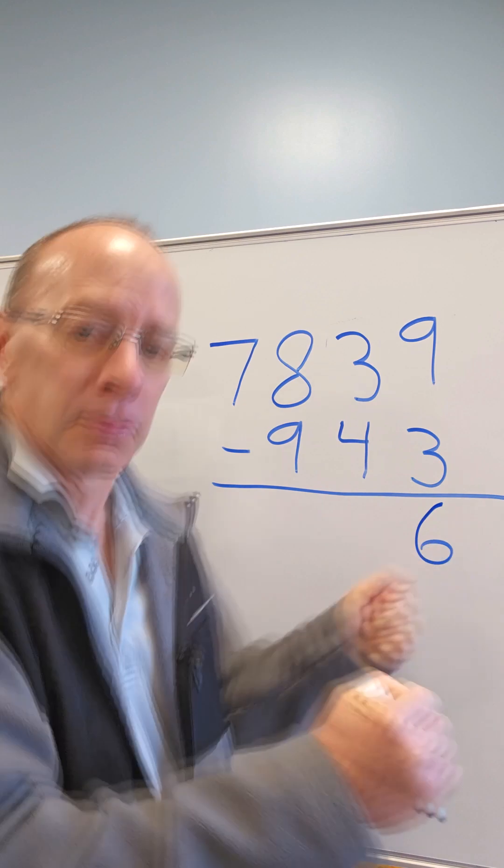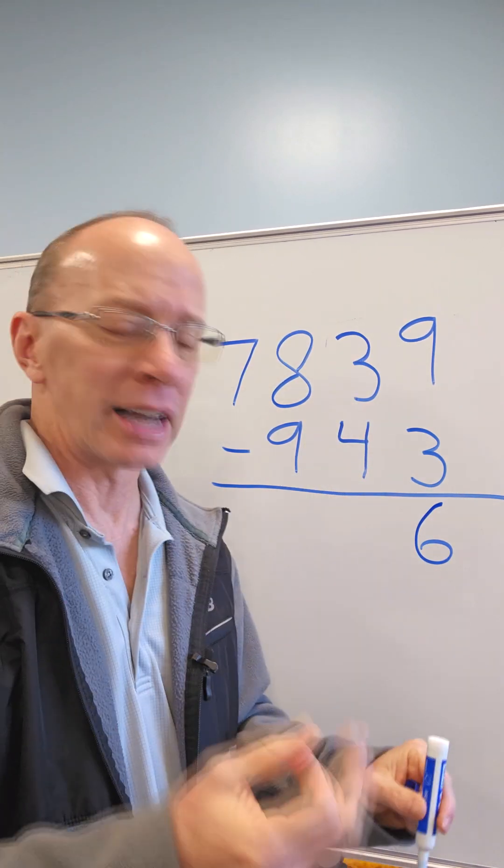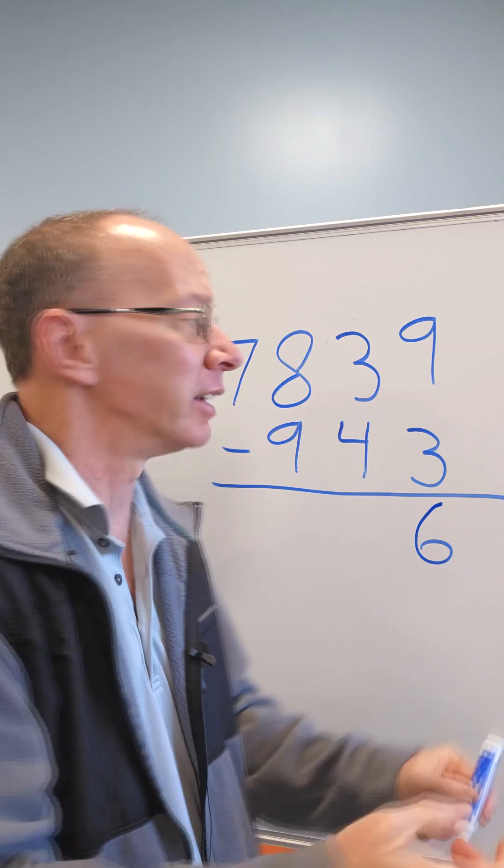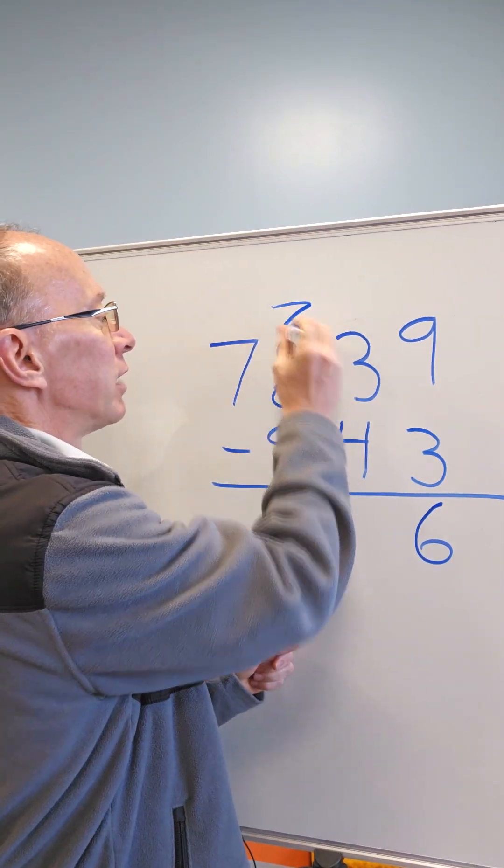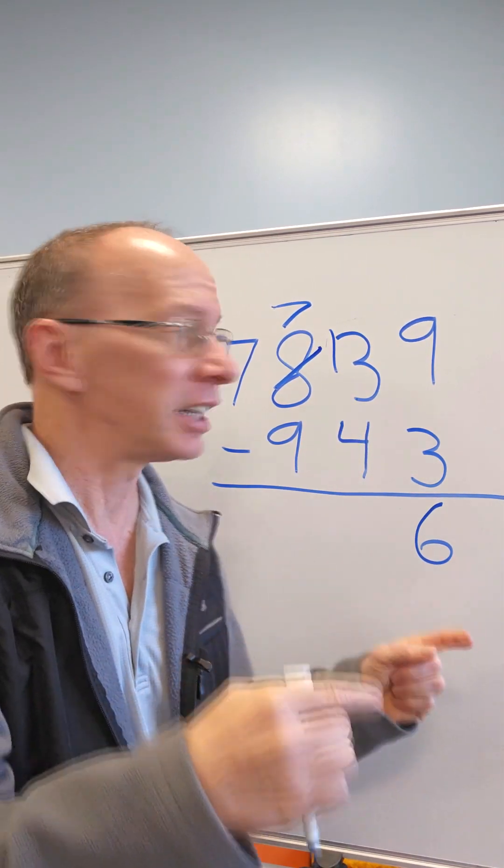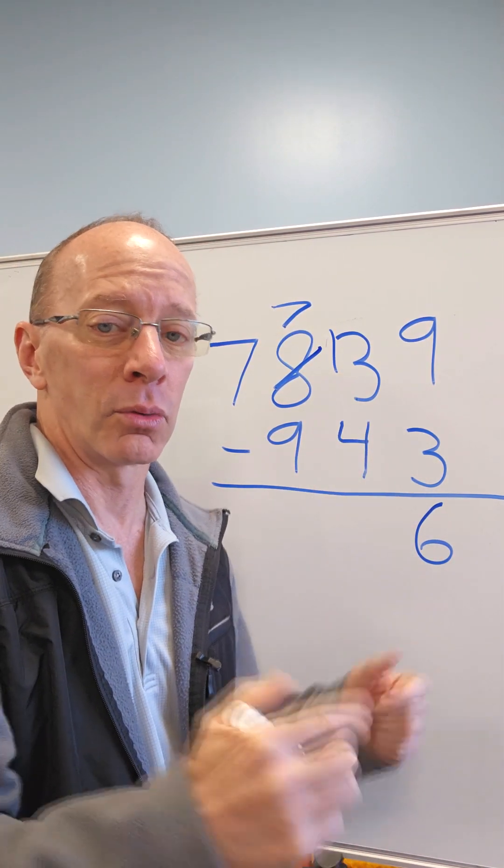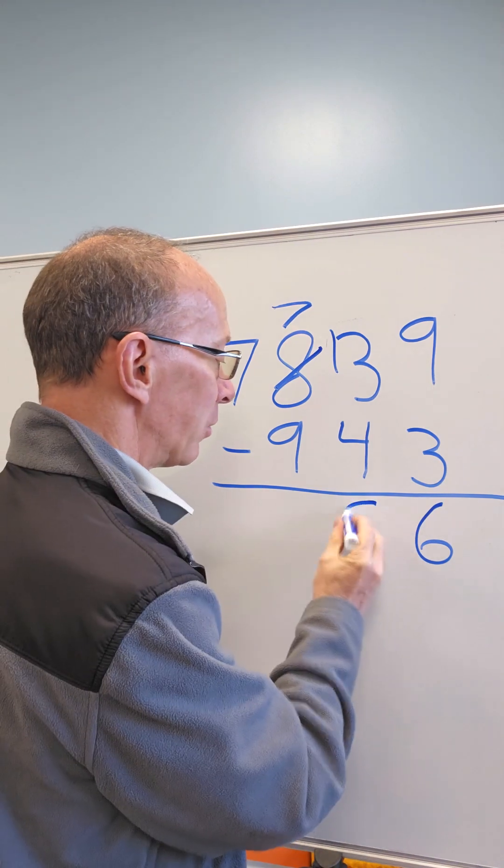We move over to the tens. Here's the tens. 3 minus 4. What? That means I got 3 cookies. You want to take 4 away? Can't do it. Need to go next door, borrow some cookies. So I take 1 away from the 8. This becomes 7. Put that 10 over there. This becomes 10 and 3 is 13. So now I got 13. 13 minus 4. What is it? 9. So I put the 9 right over here.